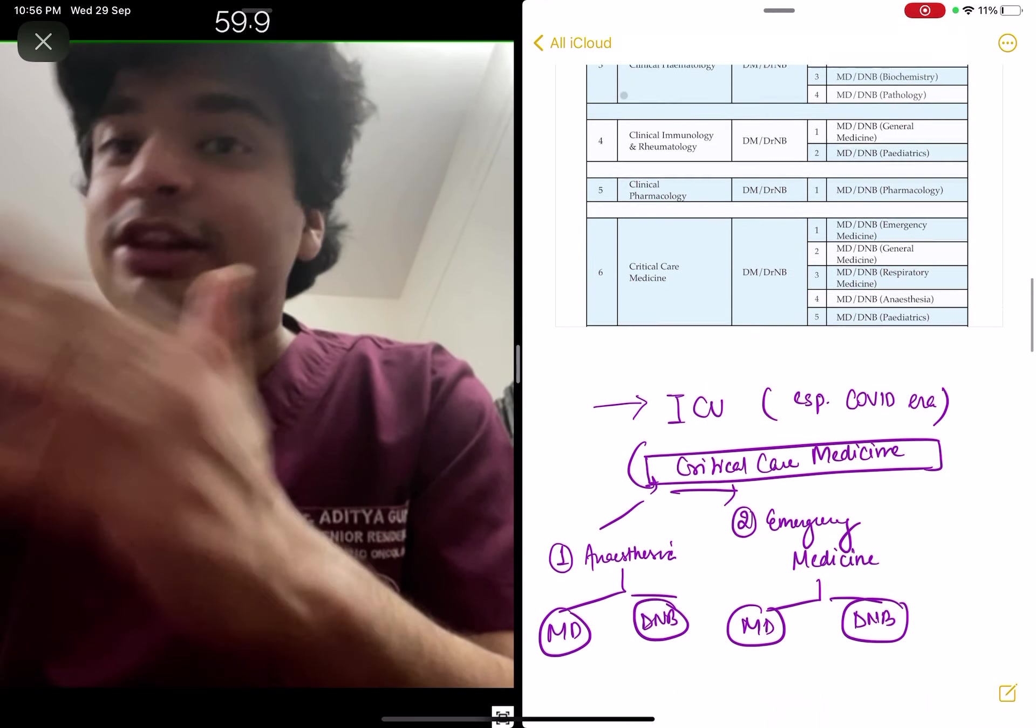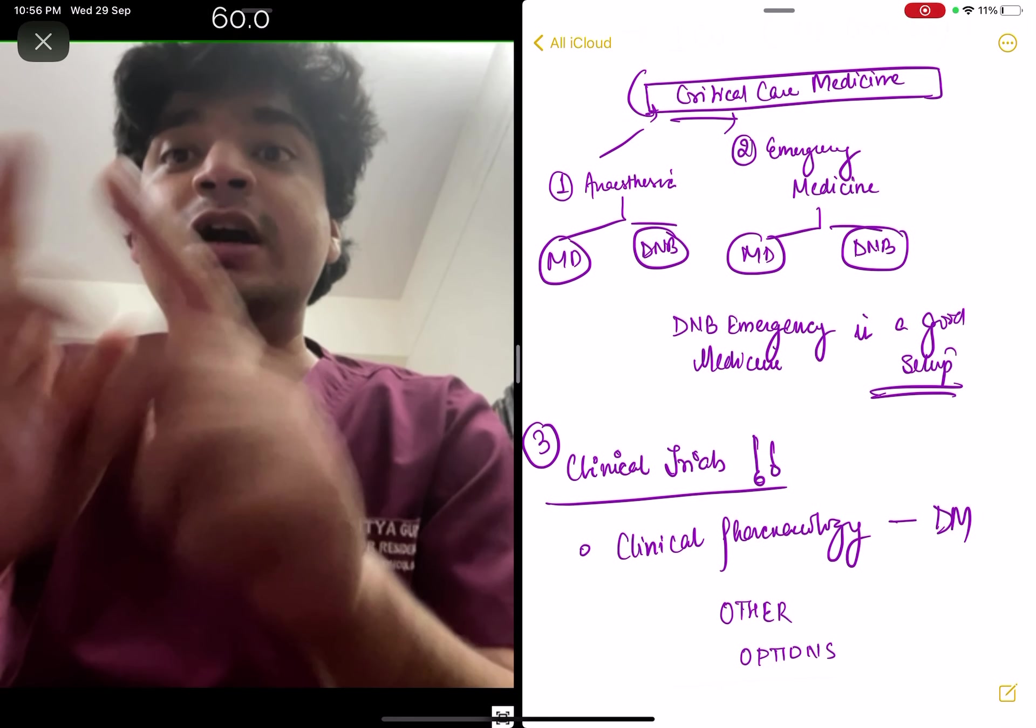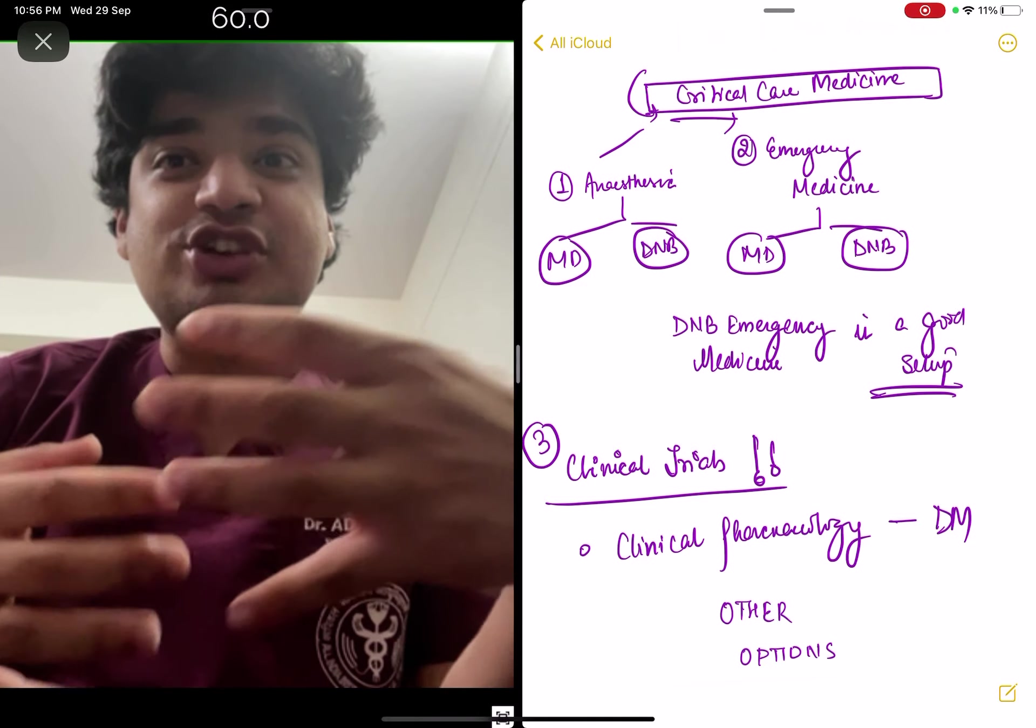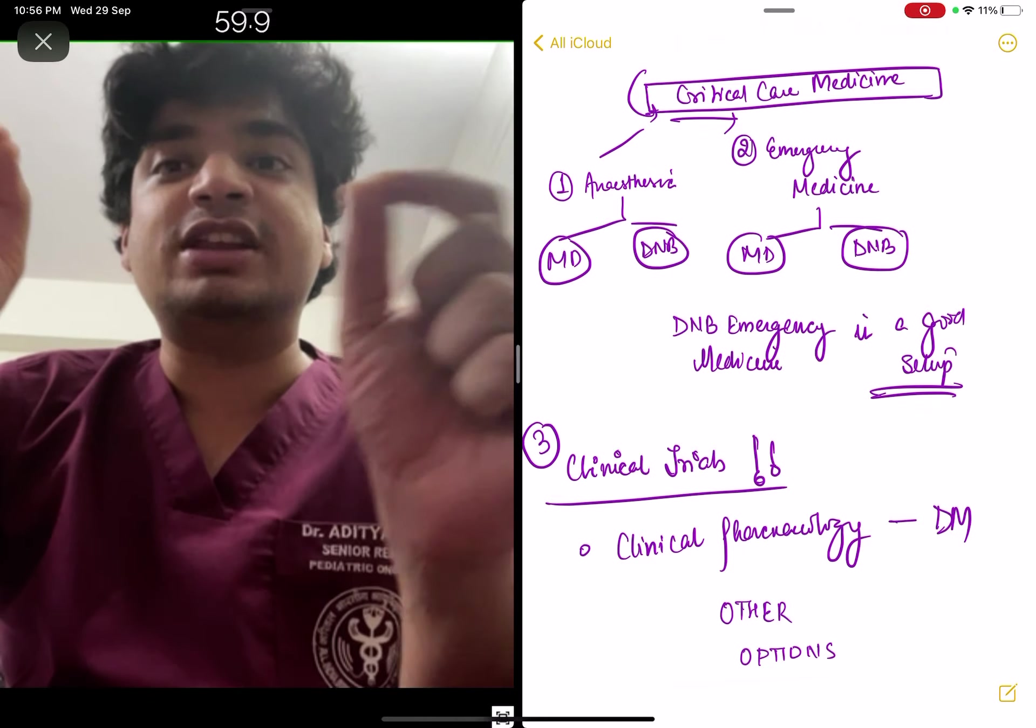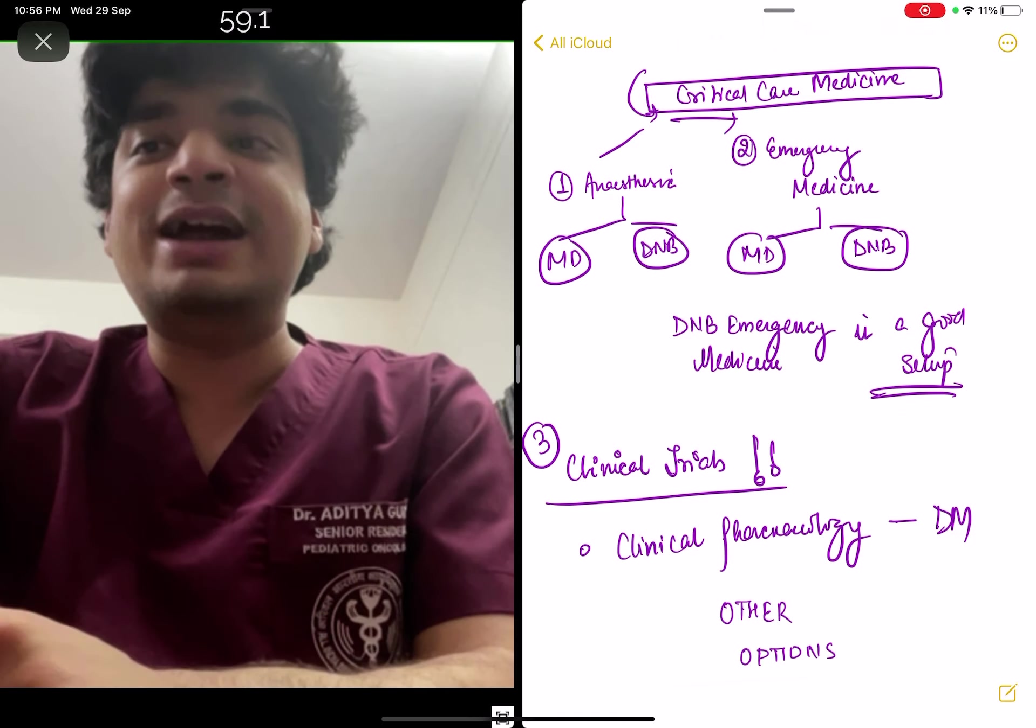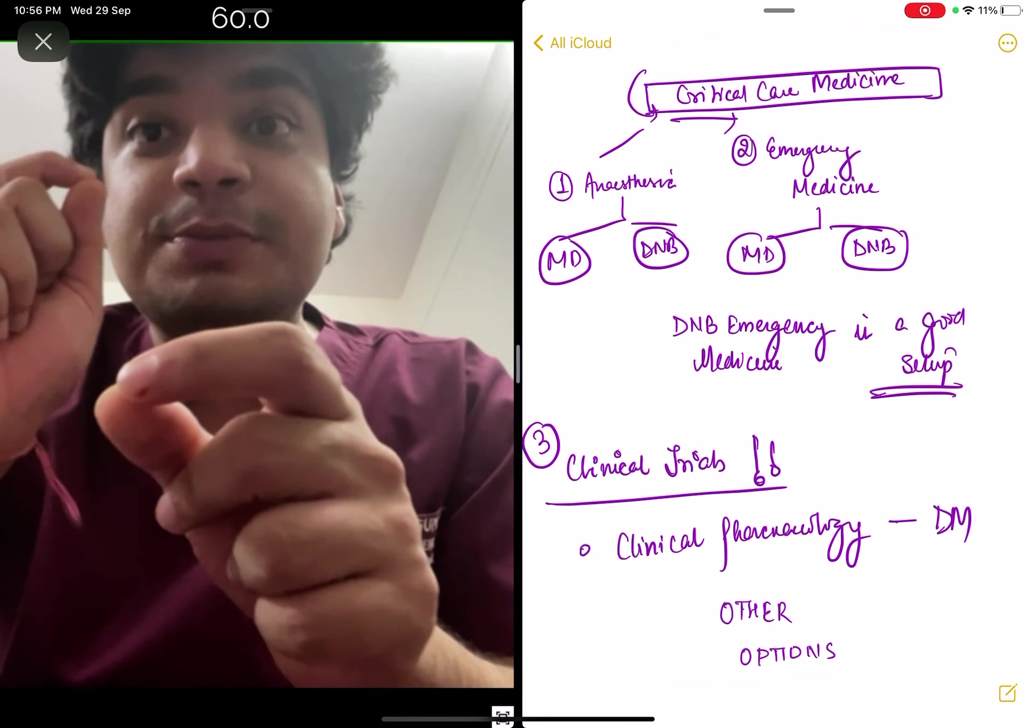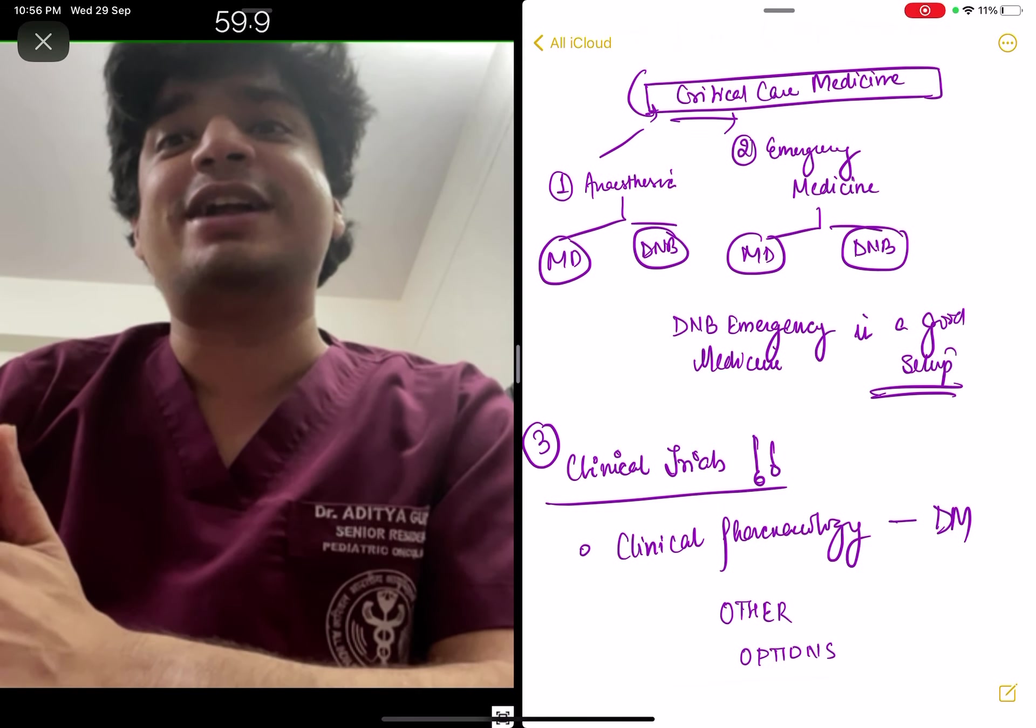Another thing I want to focus on is clinical pharmacology, another up and coming DM. You can think of pharmacology especially if you want to run clinical trials. India is currently the second or third largest site of running clinical trials after US and European Union. Clinical trial investigators are paid very handsomely by the pharma companies. DM in clinical pharmacology will give you good prospects.